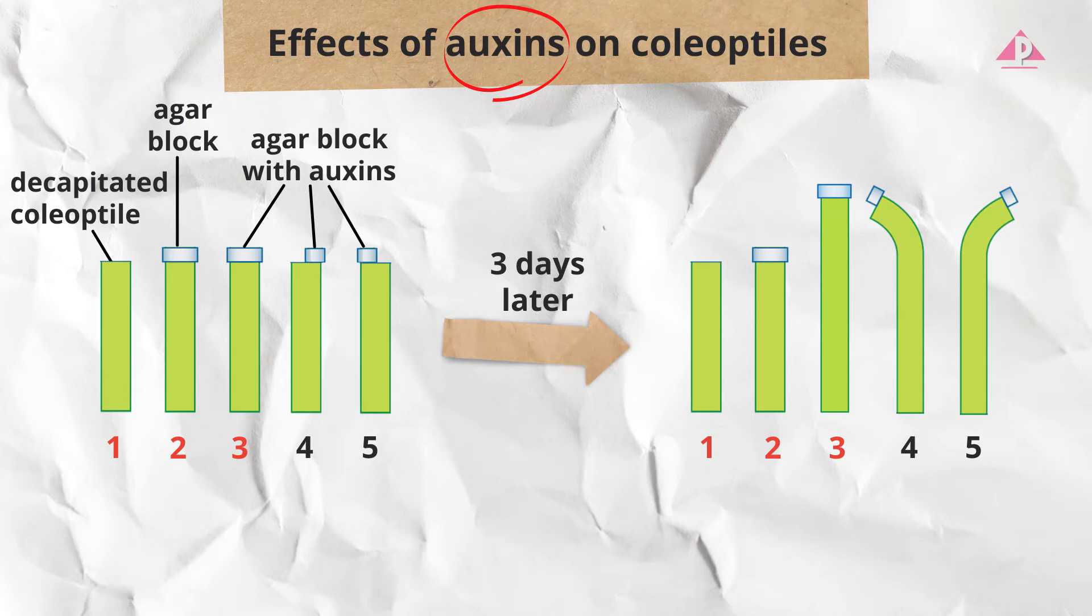Then compare 2 and 3. Both were decapitated coleoptiles with an agar block placed on top but only the agar block on 3 contains auxins. The result shows that only coleoptile 3 grew.